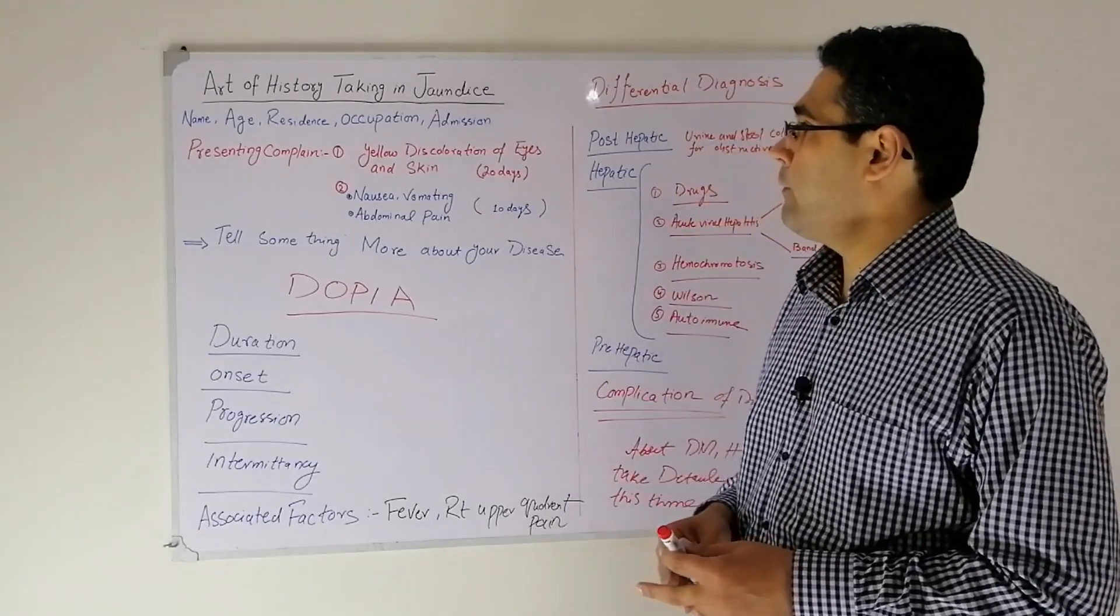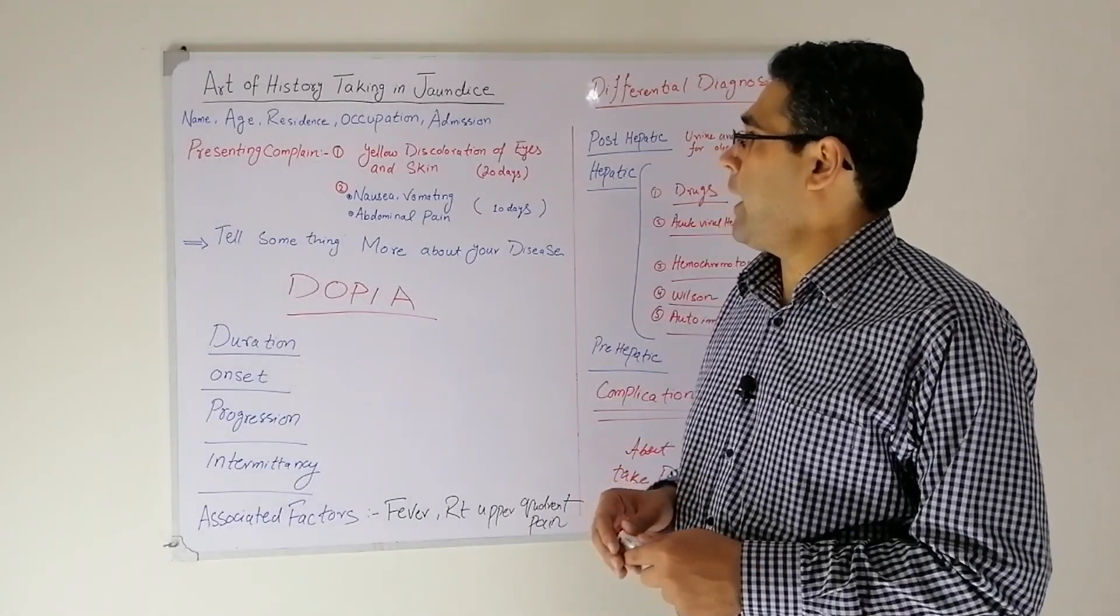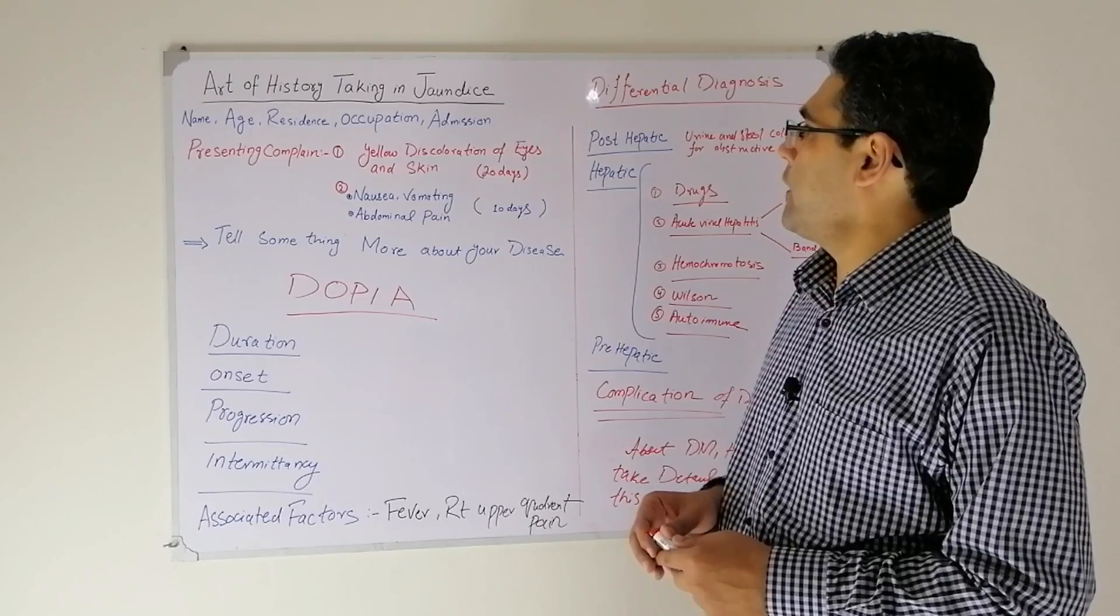First of all, we will start with name, age, residence, occupation, and then admission.